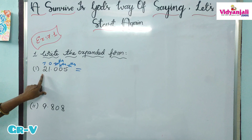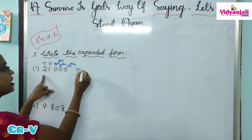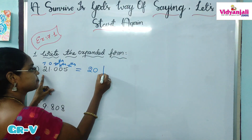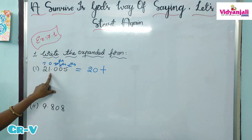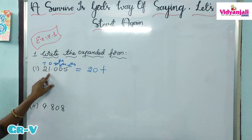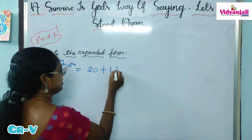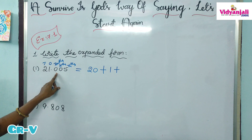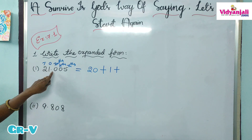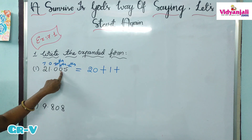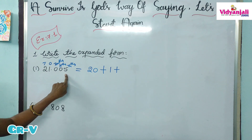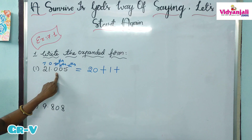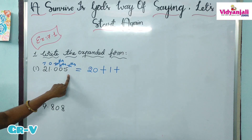Now what is the place value of 2? 2 is in the tens place, so the place value is 20. 1 is in the 1's place, so the place value of 1 is 1. When we have 0's, if you want we can write them, otherwise we can avoid them. So 0 by 10, 0 by 100, and then 5 by 1000.